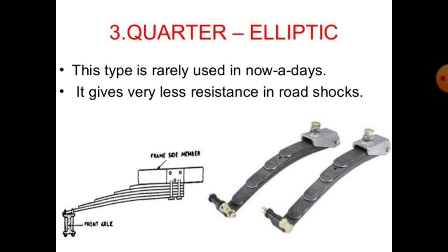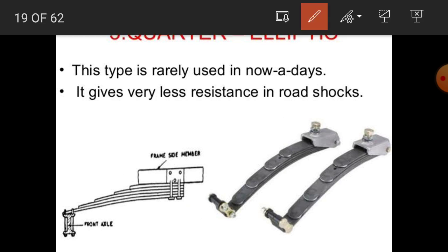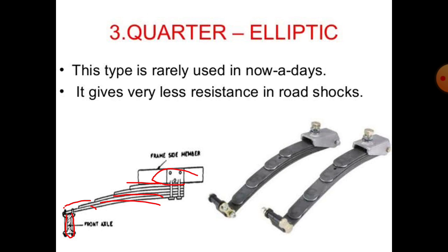The third type is the three-quarter leaf spring. This type is rarely used nowadays. It gives very little resistance to road shocks. In this diagram, the front side member is shown, with leaf springs connected and the last leaf connected to the front axle.